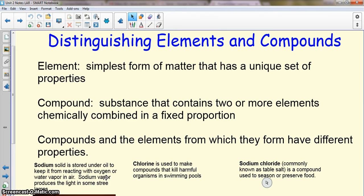One of the terms that we want to make sure that we distinguish between would be the difference between an element and a compound. An element would be the simplest form of matter that has a unique set of properties. These are the things that we can identify on the periodic table. Elements have atoms of all the same kind.